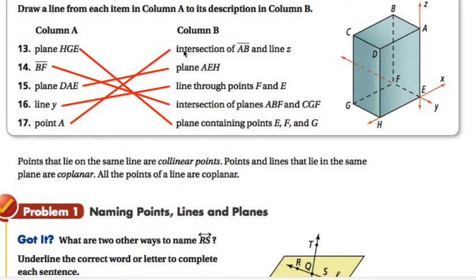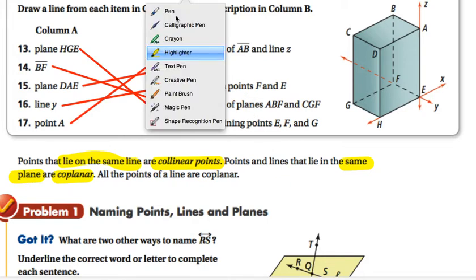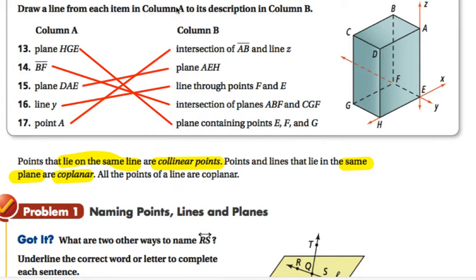Another definition for you or something to keep in mind. Points that lie on the same line are called collinear points. Collinear lie on the same line. Points and lines that lie in the same plane are called coplanar. All points of a line are coplanar. That's another one of those little tidbits to remember.